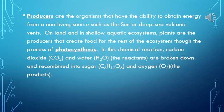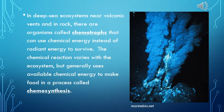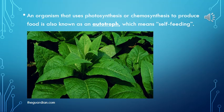On land and in shallow aquatic ecosystems, plants are the producers that create food for the rest of the ecosystem through the process of photosynthesis. In this chemical reaction, carbon dioxide and water — the reactants — are broken down and recombined into sugar and oxygen — the products. In deep-sea ecosystems near volcanic vents and in rock, there are organisms called chemotrophs that can use chemical energy instead of radiant energy to survive. The chemical reaction varies with the ecosystem, but generally uses available chemical energy to make food in a process called chemosynthesis. An organism that uses photosynthesis or chemosynthesis to produce food is also known as an autotroph, which means self-feeding.